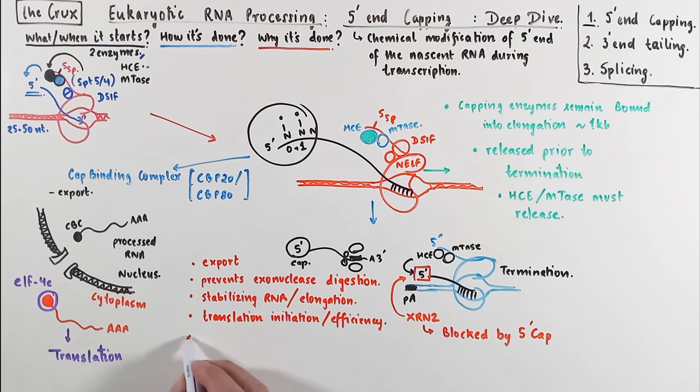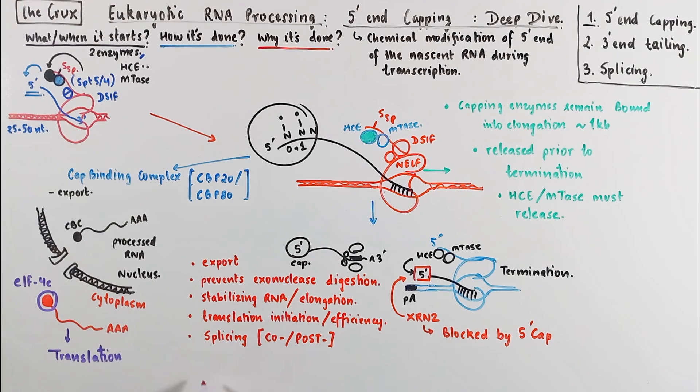Something that I haven't really touched here is that capping also helps in the process of splicing of the RNA. And it is usually the promoter proximal introns that get the help. And this can be done in either co- or post-transcriptional manner.